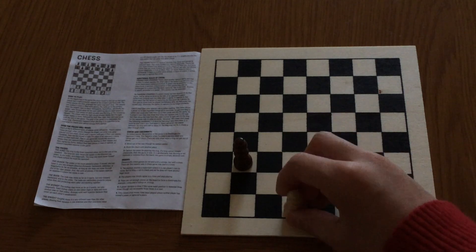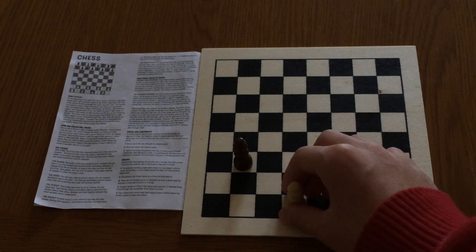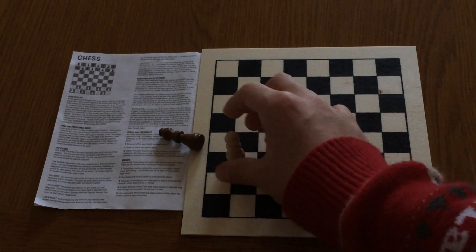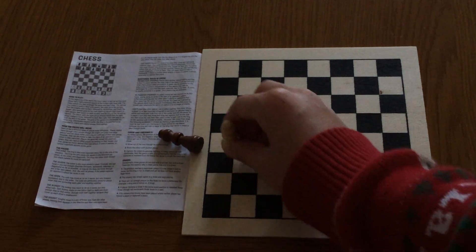It cannot go through pieces. For example, the Queen can capture this black piece, but it cannot go here.